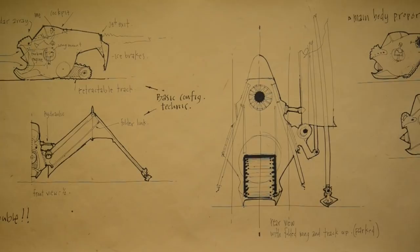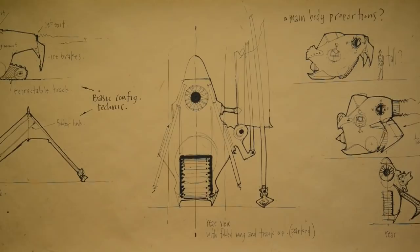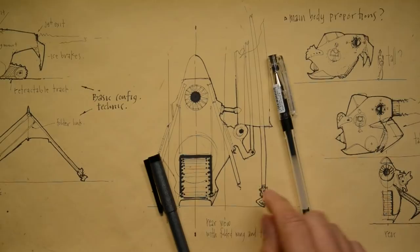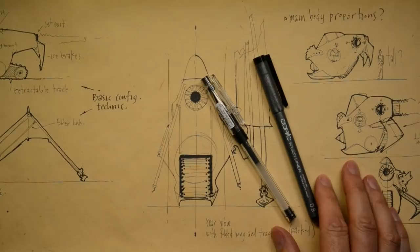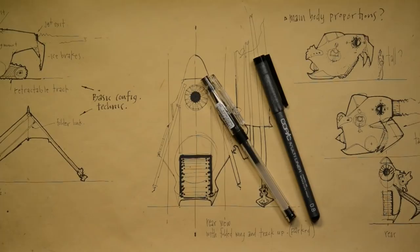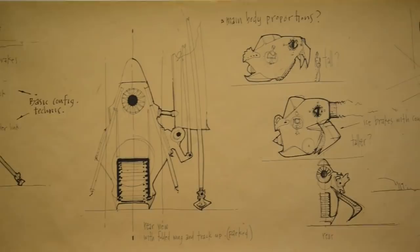I chose to sketch in pen. These drawings are done with a pilot high-tech C for the fine lines and then something like a Copic multi-liner to hit the heavy lines. By using a really unforgiving medium like a pen that as soon as you touch it to the paper it's completely black, you really have to think ahead.